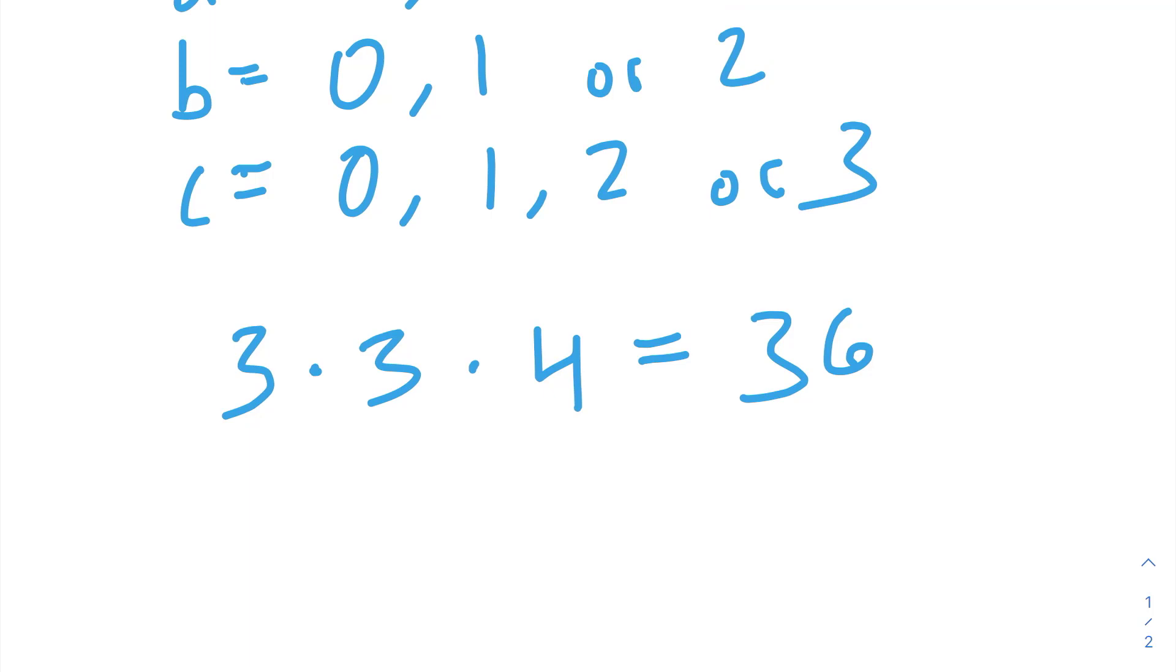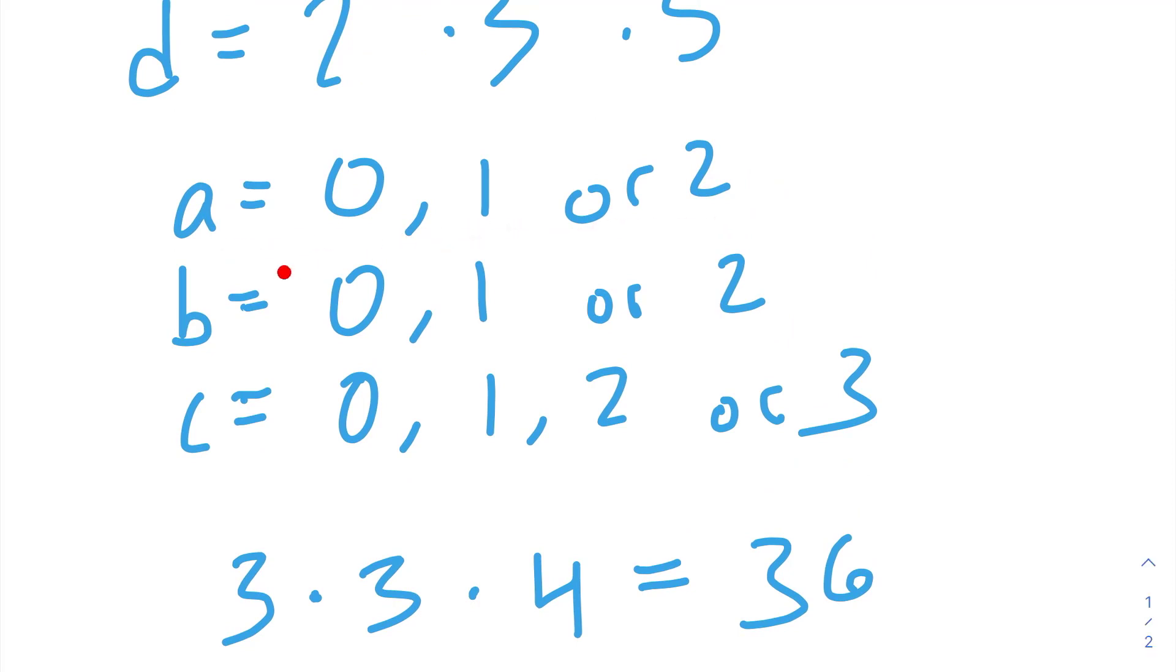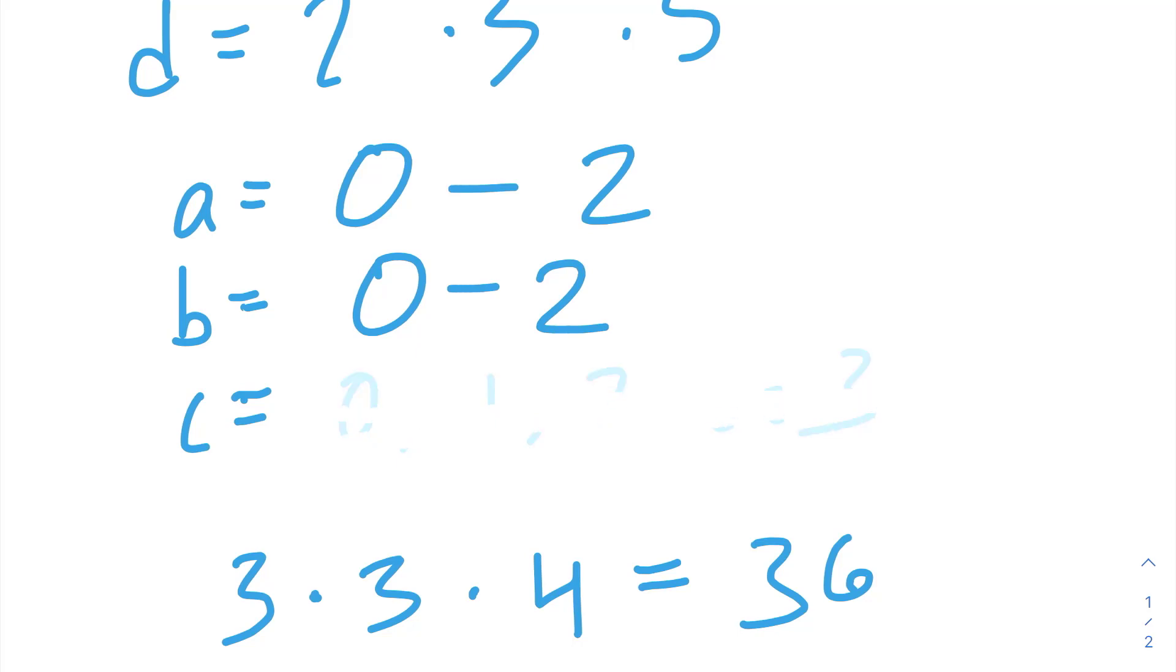Now, let's try to generalize this a bit more. We said that a can be equal to 0, 1, or 2. So, in other words, it can be equal to any integer between 0 and 2. B is equal to 0, 1, or 2, which is also any integer between 0 and 2. C equals 0, 1, 2, or 3, which, again, can be expressed as any integer between 0 and 3.